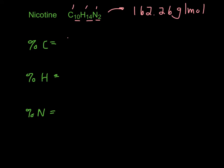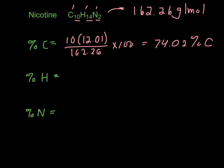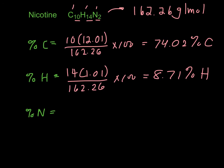So the percentage of carbon is you've got 10 carbons, so 10 times 12.01 divided by 162.26 times 100 is 74.02% carbon. For the hydrogen, there's 14 of them, and they each weigh 1.01, and again, the whole compound weighs 162.26 times 100 is 8.71% hydrogen.